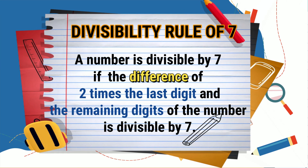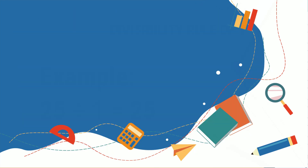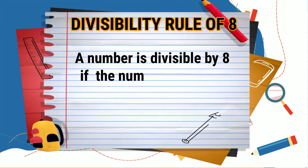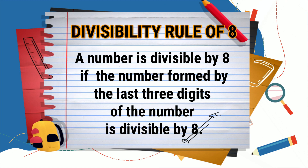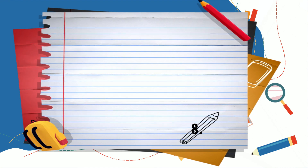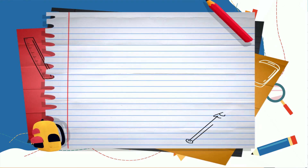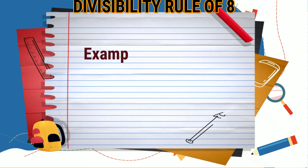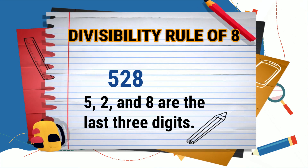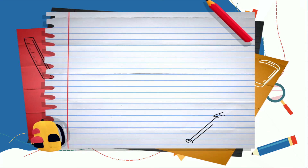The eighth rule is the divisibility rule of 8: a number is divisible by 8 if the number formed by the last 3 digits of the number is divisible by 8. Let's have this example: 2528. The last 3 digits are 5, 2, and 8, and they form the number 528.